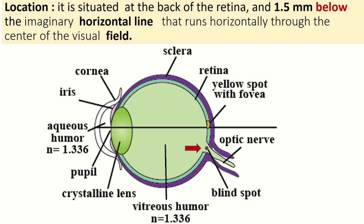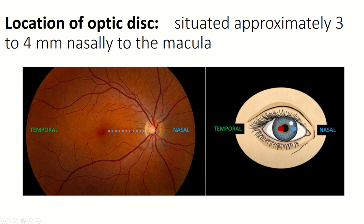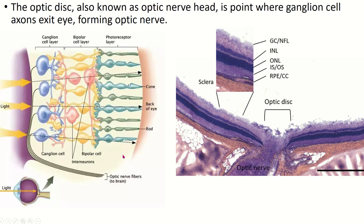The optic disc is situated in the back of the retina, 1.5 mm below the imaginary horizontal line through the center of the visual field, and 3 to 4 mm nasally to the macula. The macula is present at the temporal site and the optic disc is present nasally. The optic disc, also known as the optic nerve head, is the point where ganglion cell axons exit the eye forming the optic nerve.